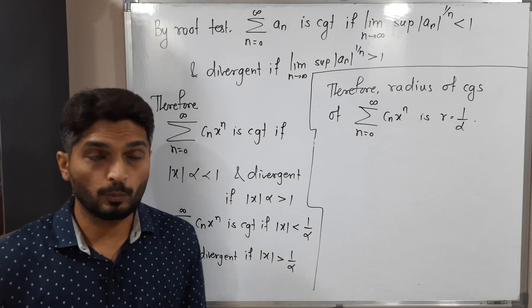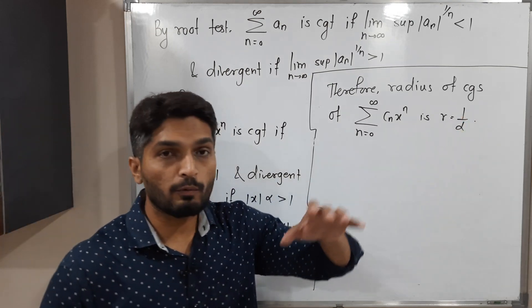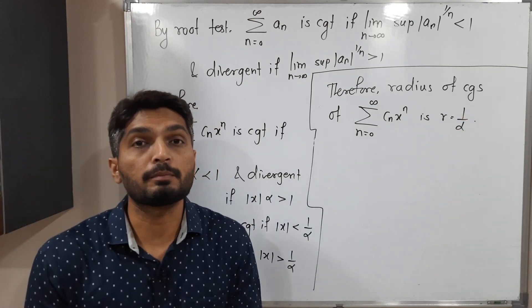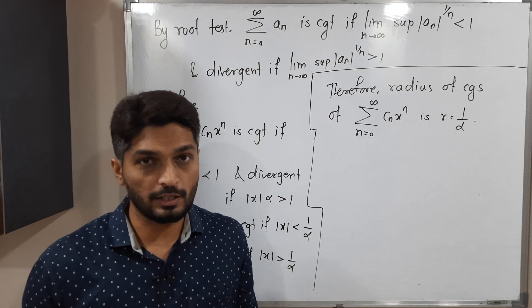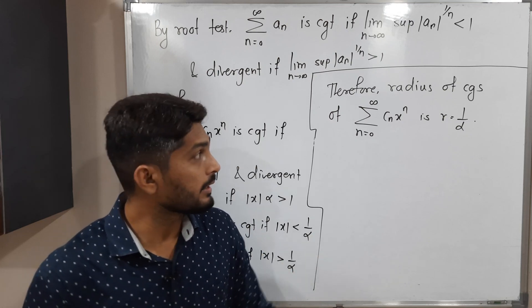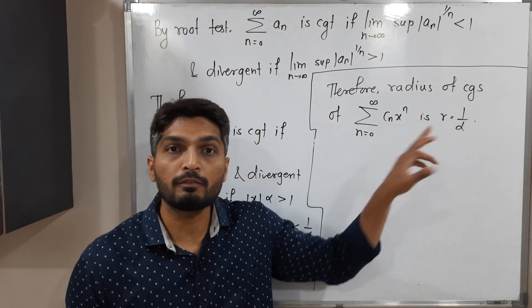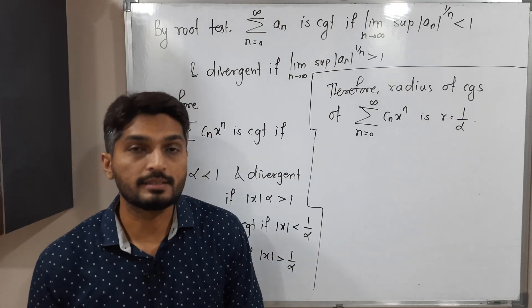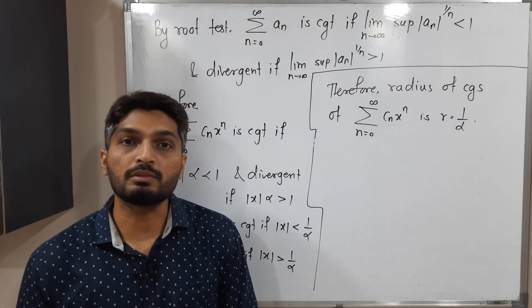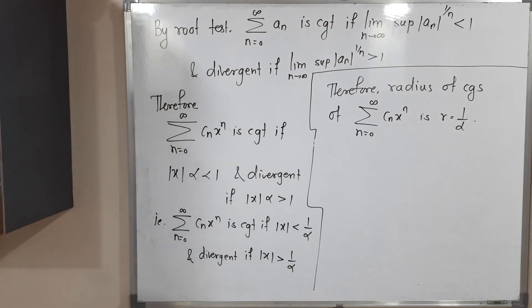There are two special cases: if α = 0, then R = 1/0 = ∞, meaning the radius of convergence is infinity. If α = ∞, then R = 1/∞ = 0, meaning the radius of convergence is zero. In this way we have proved the theorem. Thank you.